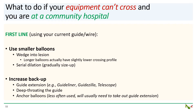There are several strategies. The first-line strategies use the guide and wire that you currently have in place. First, try smaller balloons. You wedge the balloon as much as you can into the lesion, inflate, and then gradually size up to serially larger balloons. Note that in general, longer balloons are actually slightly smaller at the distal edge than shorter balloons. Next, try to increase backup. I have a low threshold to reach for guide extension catheters such as the GuideLiner. Deep-throating the guide is another possibility. If there is a suitable side branch, inflating an anchor balloon in the side branch will increase backup. However, you will usually need to take out the GuideLiner to do this, and the anchor balloon can sometimes injure the side branch.